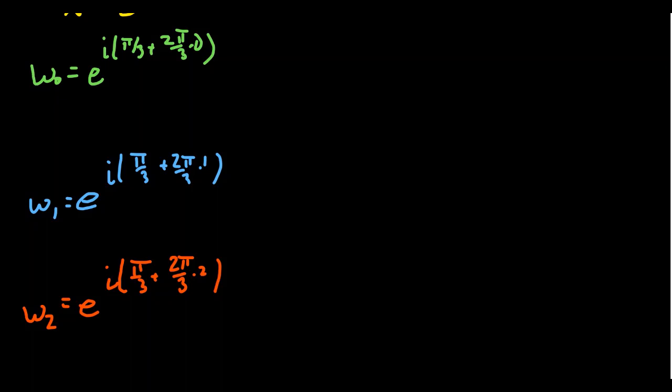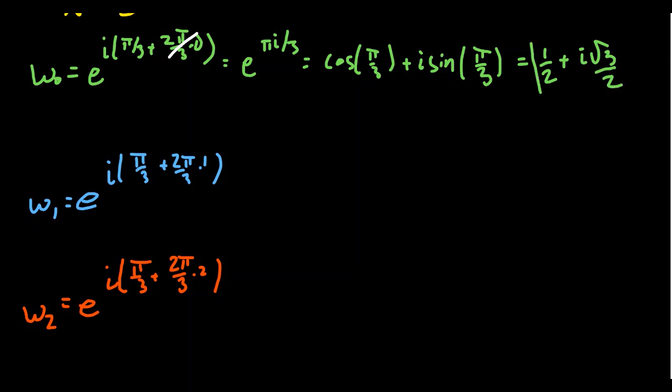Of course, with the first one, since you have 2π/3 times zero, it just disappears. So we just have to consider the complex number e^(πi/3). This is the same thing as cos(π/3) + i·sin(π/3), which is the same thing as 1/2 + i√3/2. So this is our first cube root of -1.